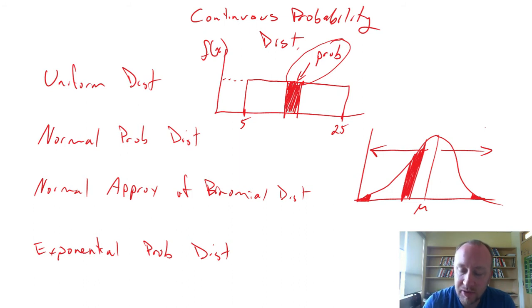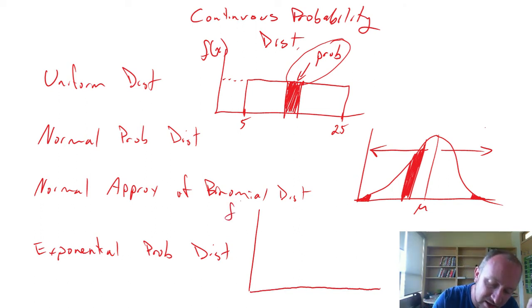Moving on to the exponential probability distribution. This one resembles very much the Poisson probability distribution. Again, we're going to be looking at a probability density function.